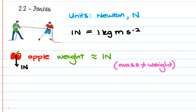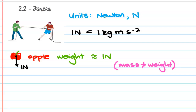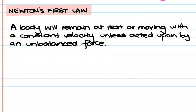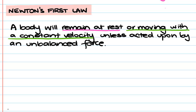There are three laws that Newton came up with — technically four, but we call them Newton's first, second, and third law. The fourth one has to do with gravitation. Let's begin with Newton's first law: a body will remain at rest or moving with a constant velocity unless acted upon by an unbalanced force. Remaining at rest just means a constant velocity of zero.